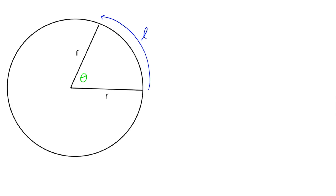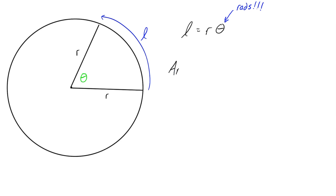We're going to call that arc length l, and you might have seen this expression before: l is equal to r times theta. This holds true so long as our angular displacement theta is in radians. We can rearrange this to say angular displacement theta is equal to l over r.